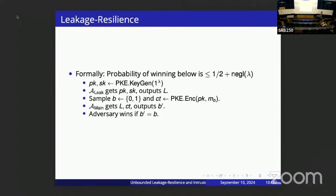In leakage resilience, we have a similar game where the adversary gets the public key but also gets the output of some leakage function applied to the secret key, producing output L. The adversary gets the ciphertext and this leakage, and again tries to guess the hidden bit b, and shouldn't do better than random guessing.